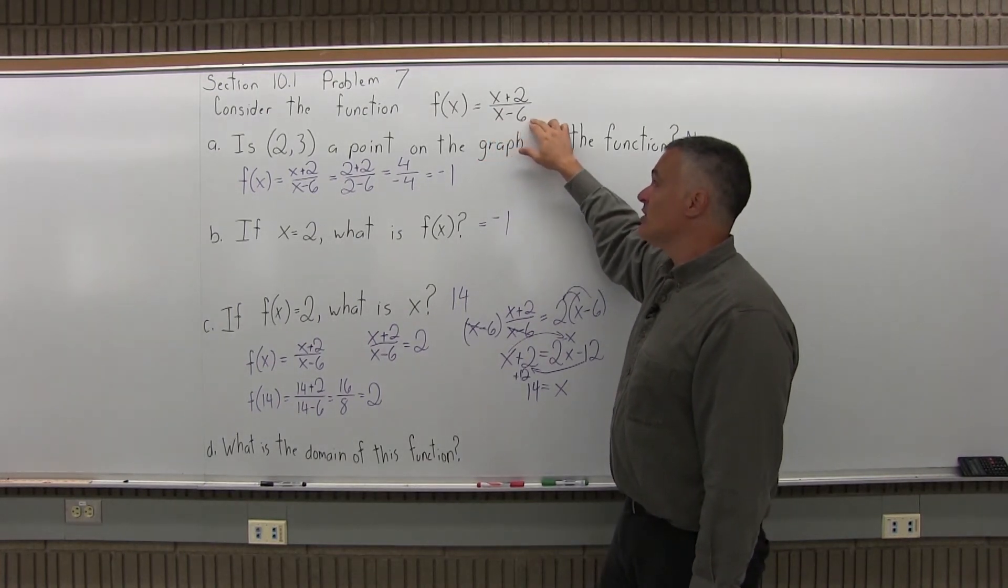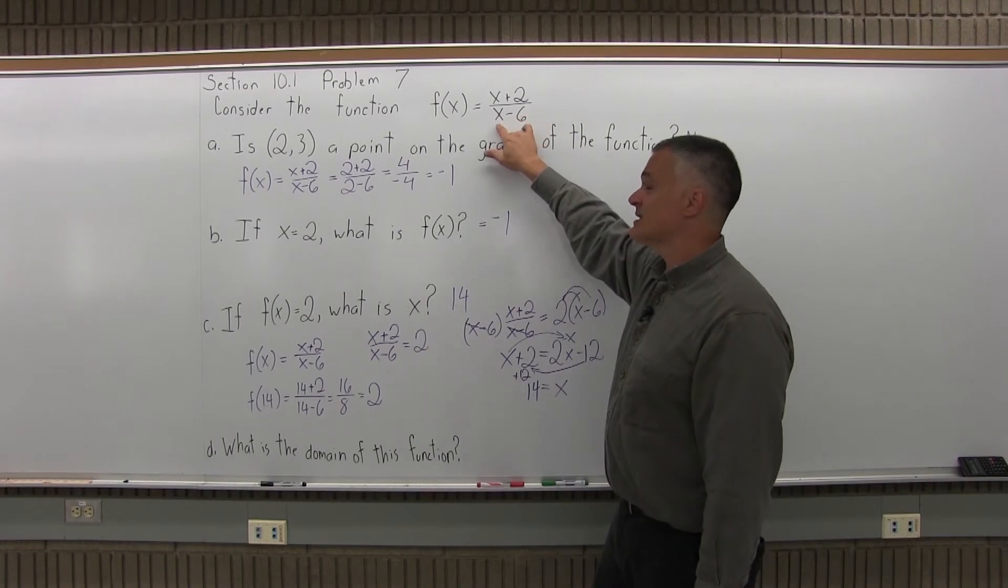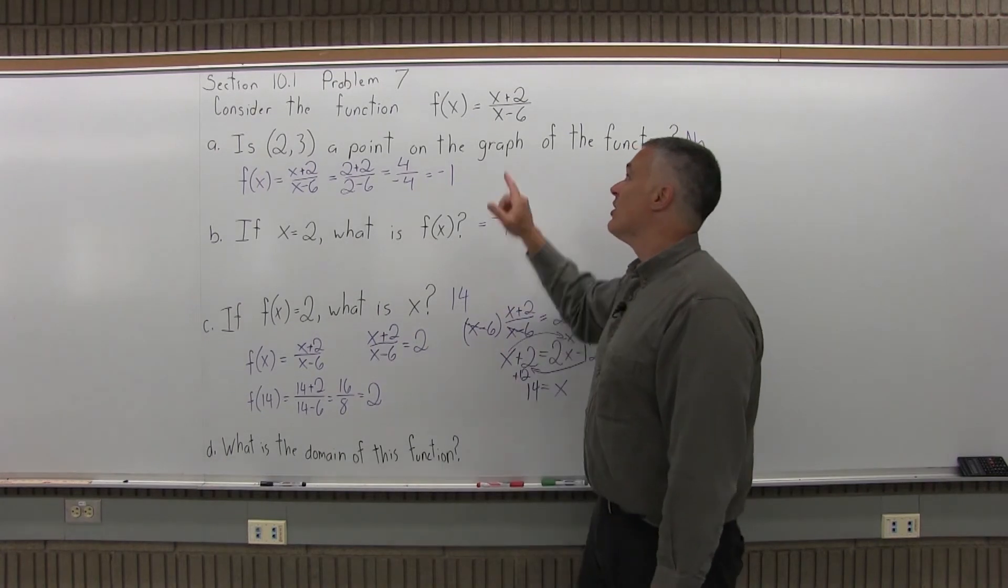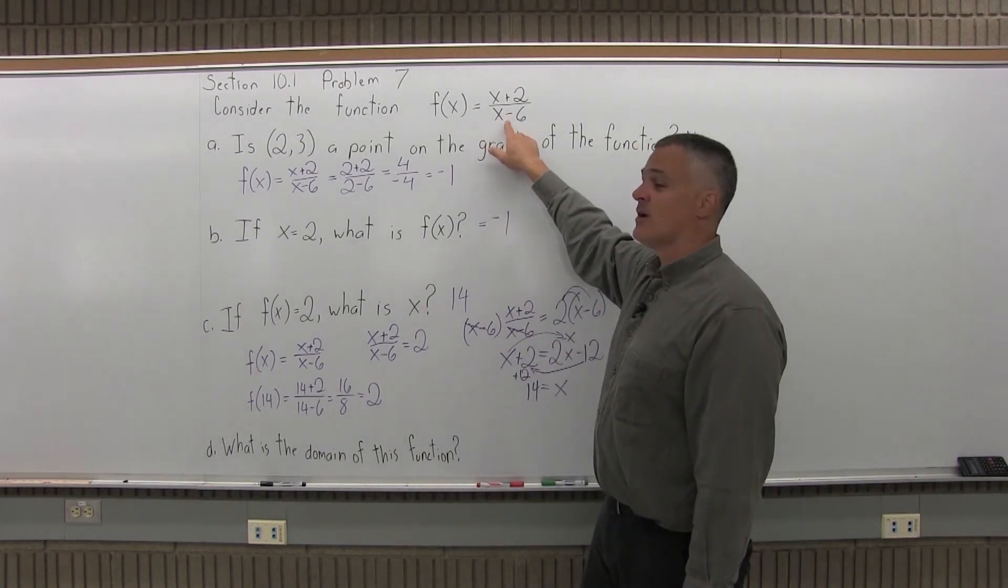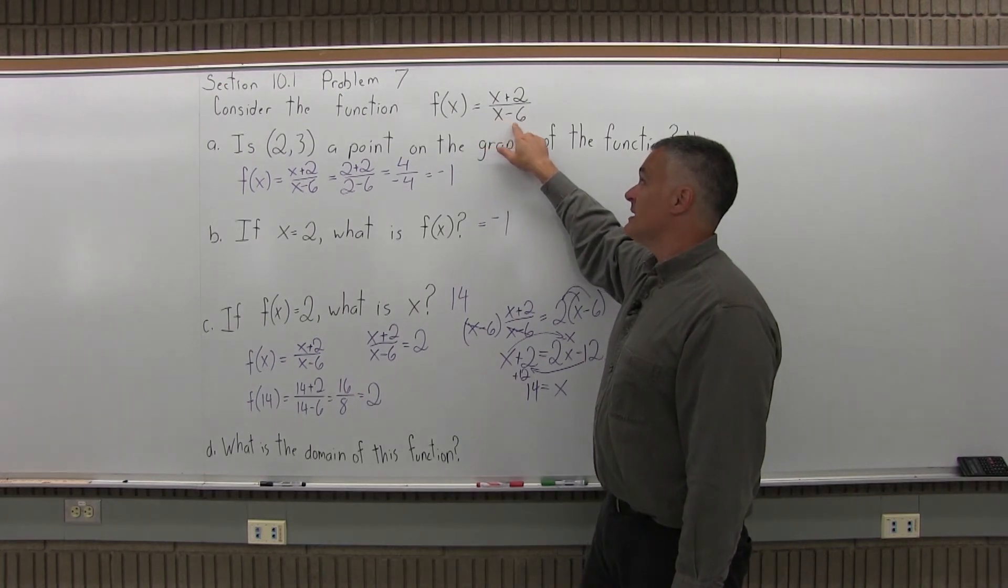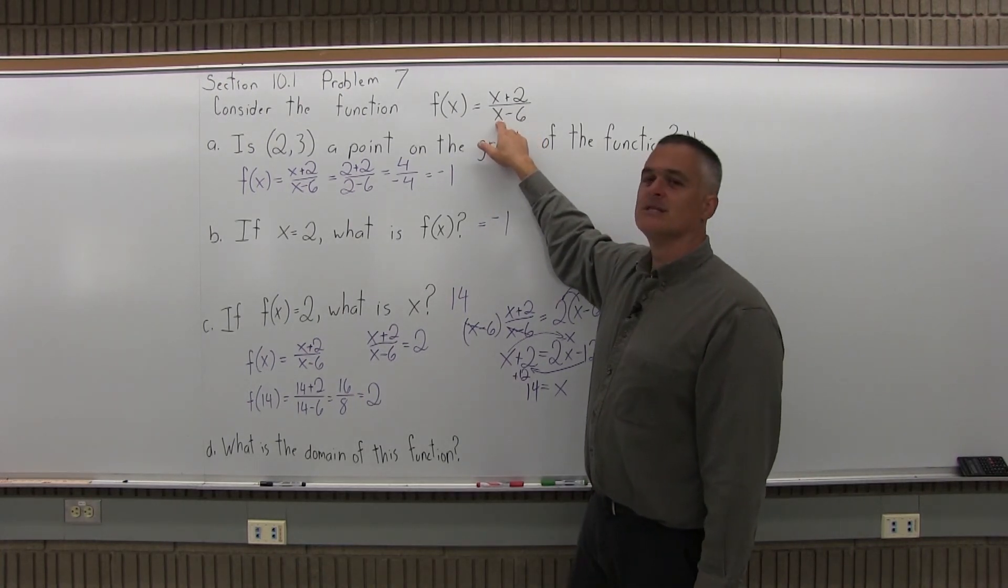But I do have a denominator. I have an x minus 6 in the denominator. I cannot allow that to be 0. The numerator can be 0, that's fine. Cannot allow the denominator to ever be 0. So if my denominator is x minus 6, the value that's going to get me in trouble is 6.